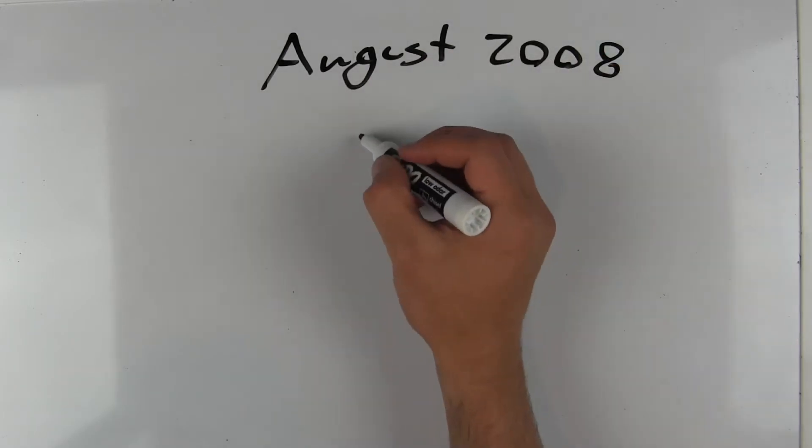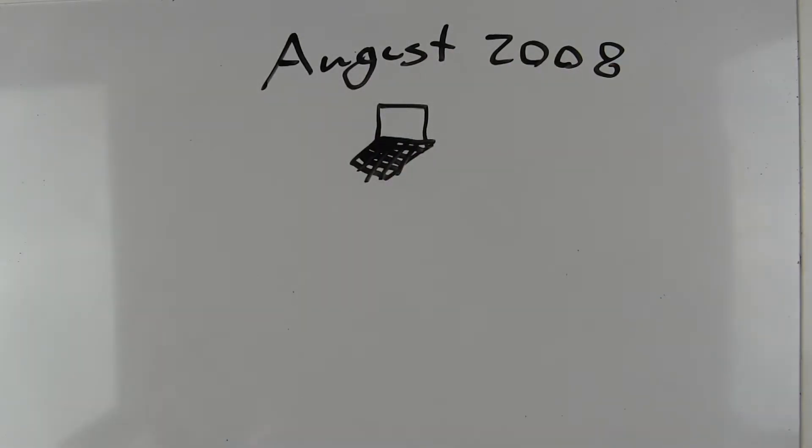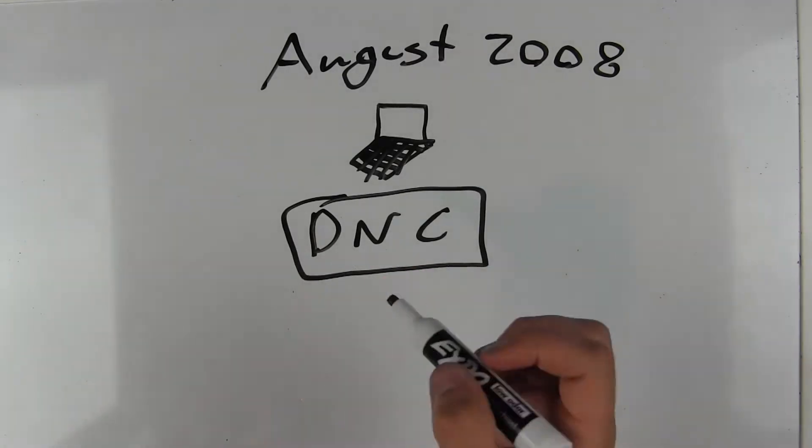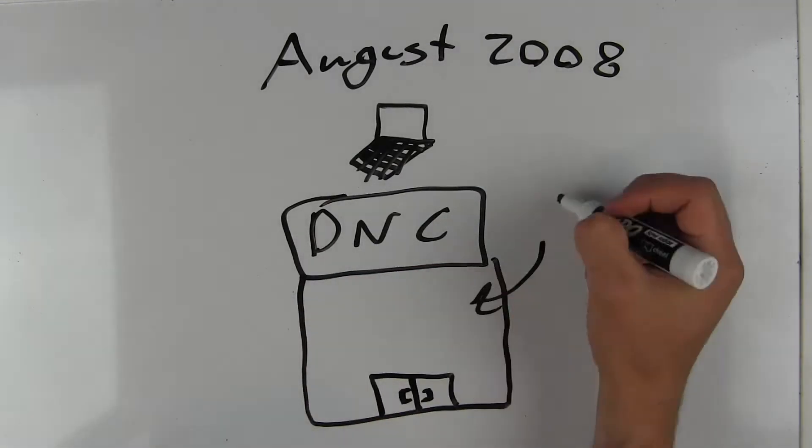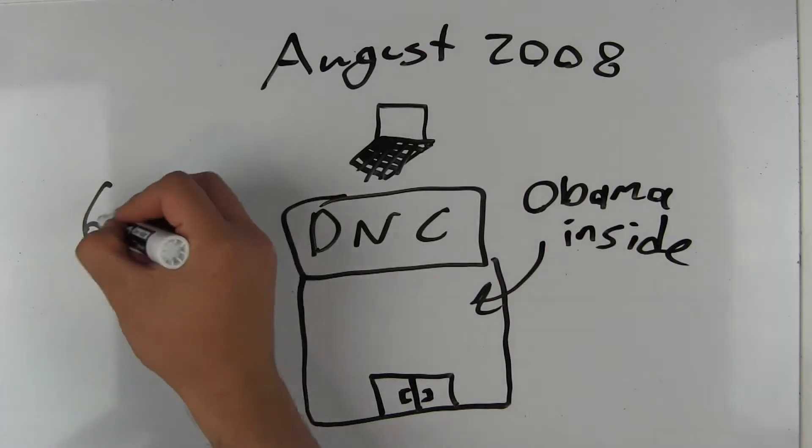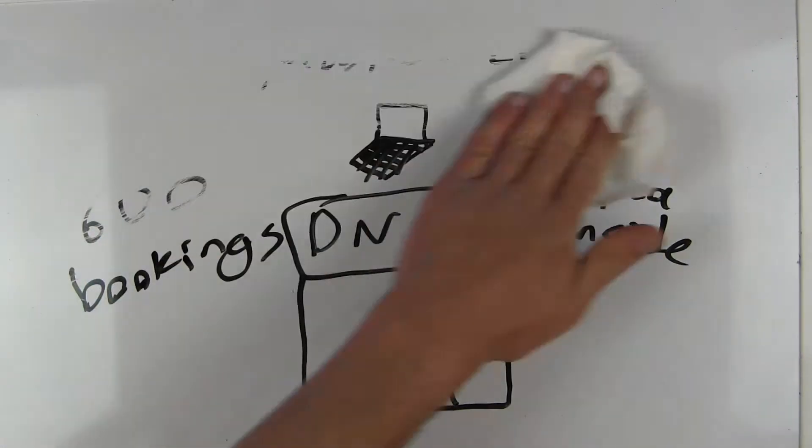They decided to change their website and relaunch in August 2008, which happened to be right before the Democratic National Convention in Denver. 600 people stayed at Airbnb during the convention, but the success was short-lived after the convention.